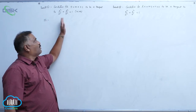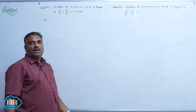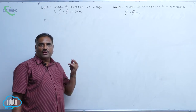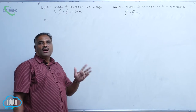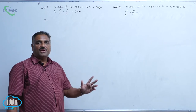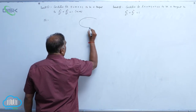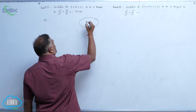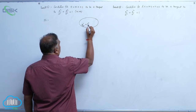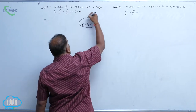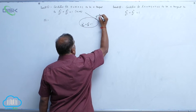We will discuss the condition for y = mx + c to be a tangent to the ellipse x²/a² + y²/b² = 1, where a > b. We are discussing all results with respect to the standard equation of ellipse. The ellipse equation is x²/a² + y²/b² = 1, and this line touches the ellipse at some point, let us say P(x1, y1).